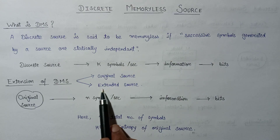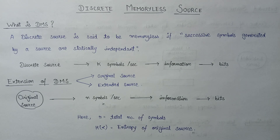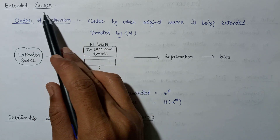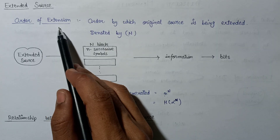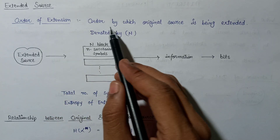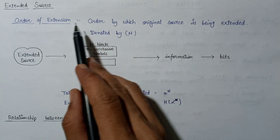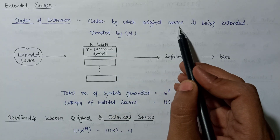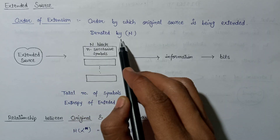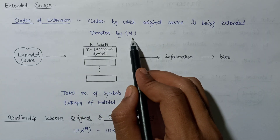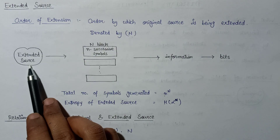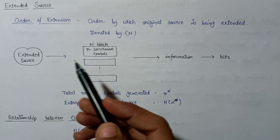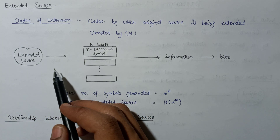Now let us look at the extended source. Before studying the extended source, let's talk about the order of extension. The order of extension is the order by which the original source is being extended, and as its name implies, it shows the order by which the original source is extended. The order of extension is denoted by the symbol capital N.